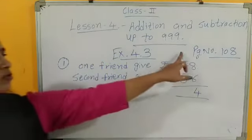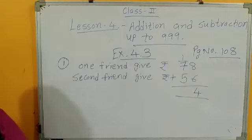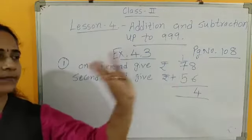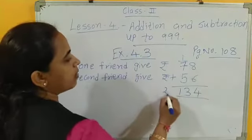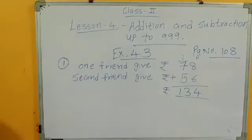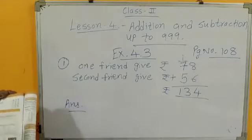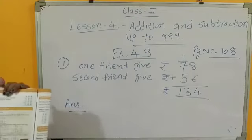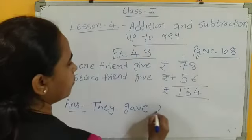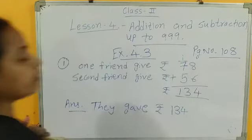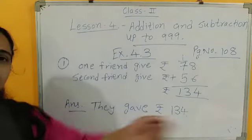Next place. So 1 plus 7, 8. 8 plus 5. So after 8, 9, 10, 11, 12, 13. So 1, 3, 13. So how much rupees? 134. So now write your answer. What answer? How much did they give in all? So they gave rupees 134 to his friend.